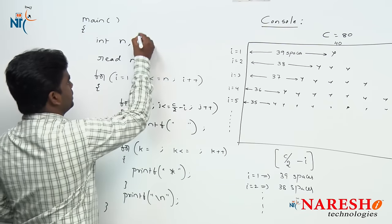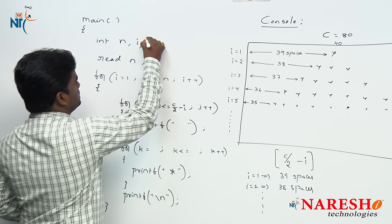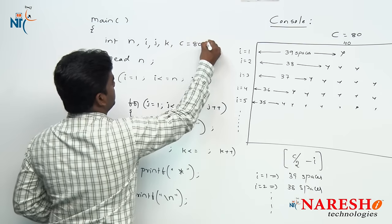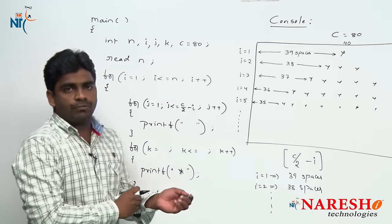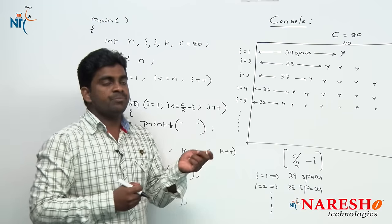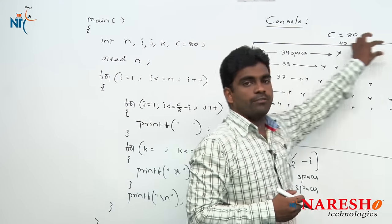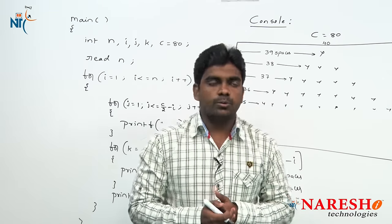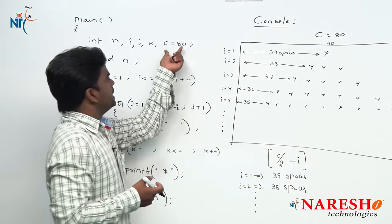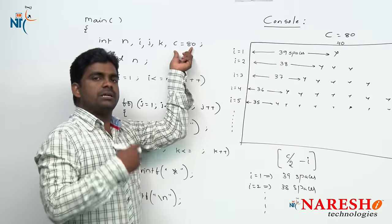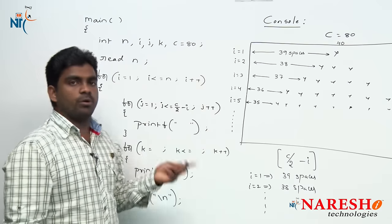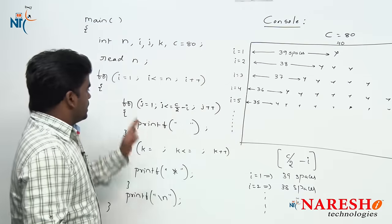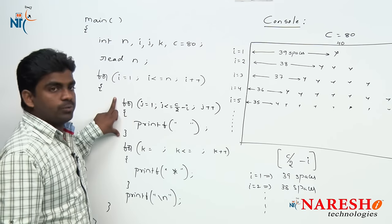We need to declare all variables i, j, k, and c with initial value 80 — because 80 characters is the maximum we can print in a single row of the console. We take c as a constant variable. We could directly use 40, but we follow proper rules. So the space printing logic is complete.